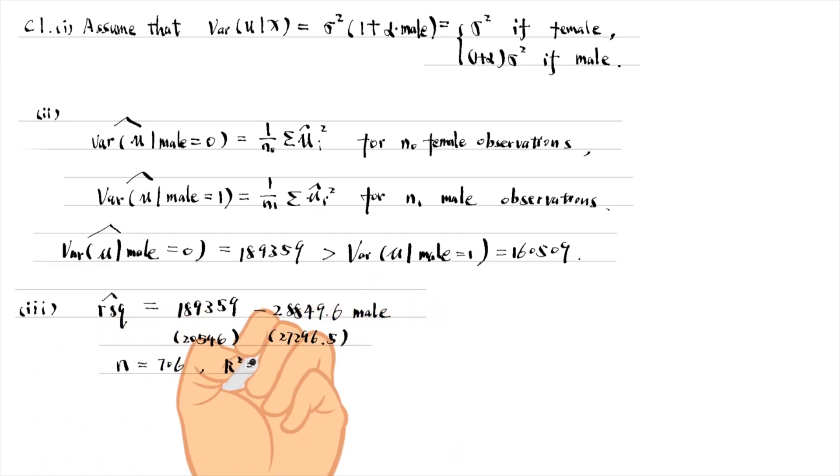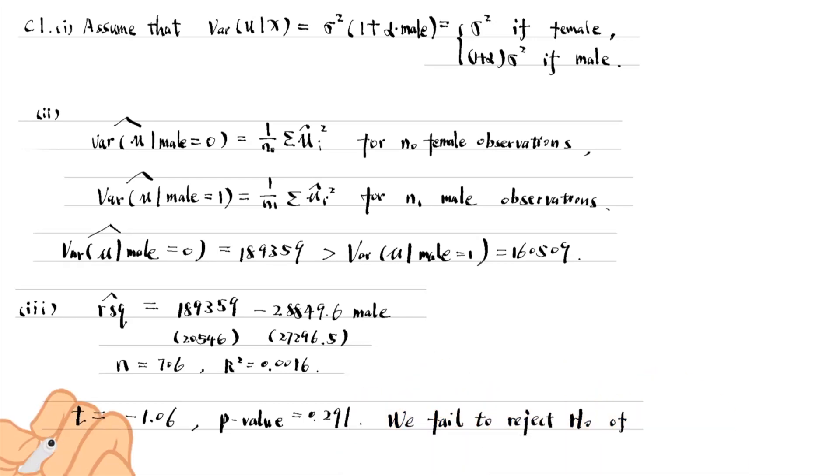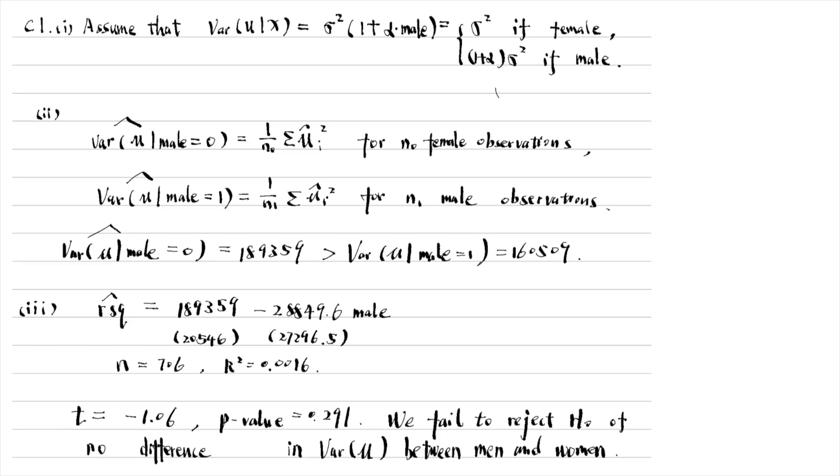The coefficient on the variable male is the difference in the error variance between men and women. We fail to reject the null hypothesis of no difference in the variance of the error term between men and women at even the 20% level against a two-sided alternative. We can reach the same conclusion if we use the multiple regression of the squared residuals on all the explanatory variables with a p-value of 0.208.